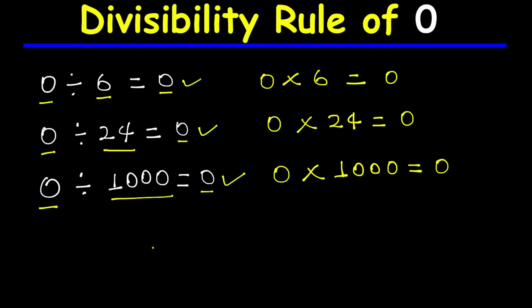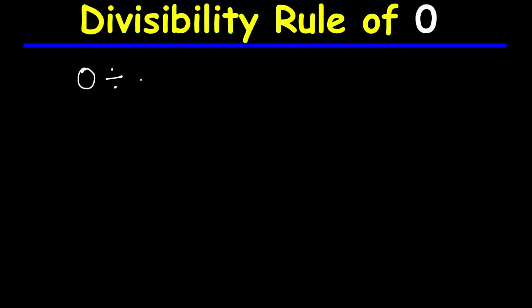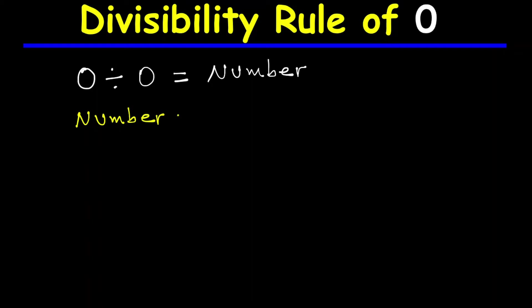But what if we divide zero by zero? What is the result of zero divided by zero — will it be zero or some other number? Let's say the answer is some number, so zero divided by zero equals some number. Since division is the inverse of multiplication, that quotient — some number — multiplied by the divisor zero must equal the dividend zero.